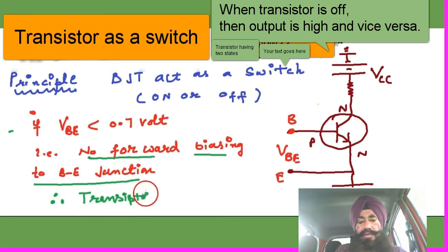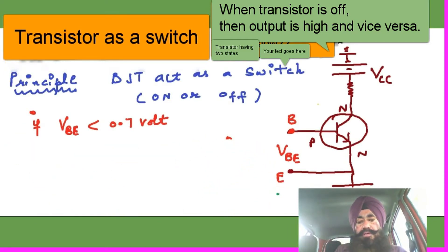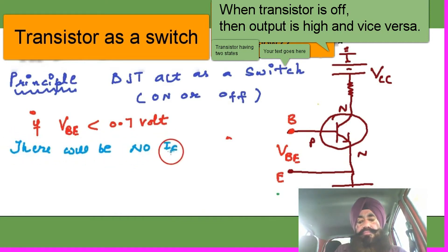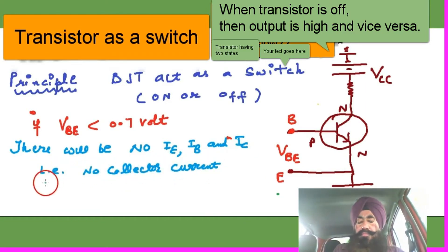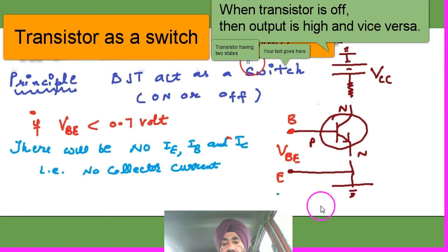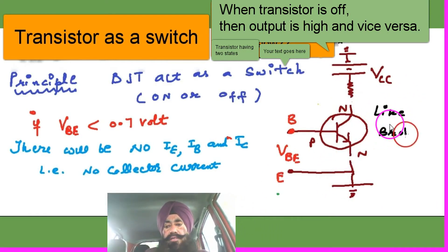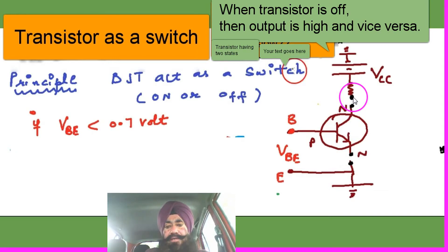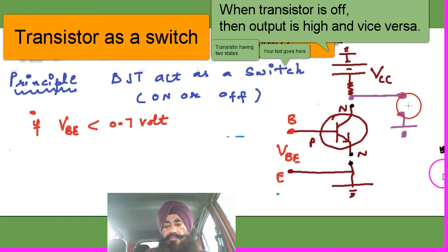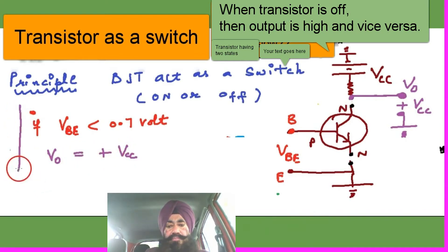If the transistor is in the off state without forward biasing, there will be no current — no emitter current, base current, or collector current. This point is broken, so the output voltage appears as VCC — a high voltage. So when the transistor is off, the output voltage is high.